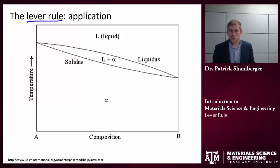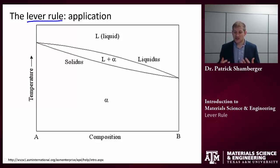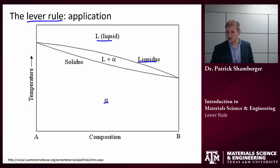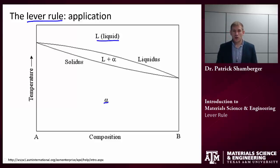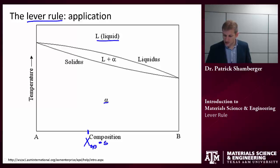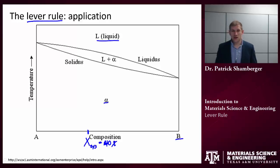We use the lever rule when we want to know what is the concentration of the different phases present — how much solid alpha and how much liquid is there. The lever rule allows us to calculate that. Let's do an example. Let's say the bulk composition, or the system composition, is about 40 percent component B.